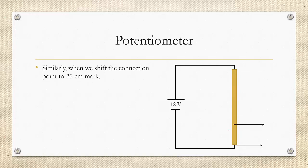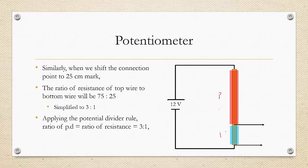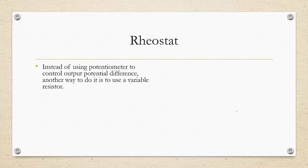When we shift the connection point to the 25-centimeter mark, the ratio of the top wire to the bottom wire is 75 to 25, which simplifies to 3 to 1. Applying the potential divider rule, the ratio of potential differences is also 3 to 1. Since the total is 12 volts, dividing in the ratio 3 to 1 gives 3 volts across the bottom section and 9 volts across the top.